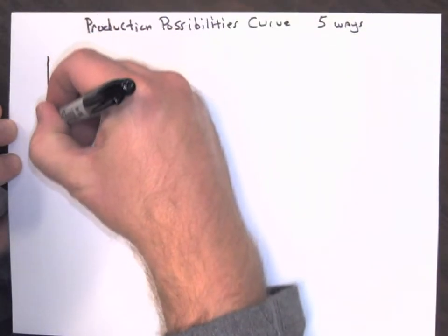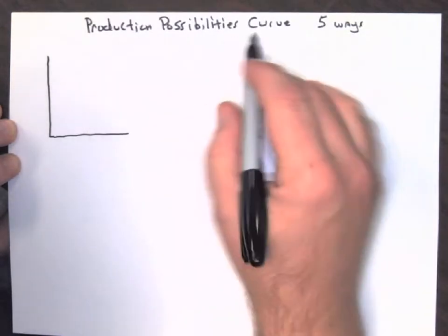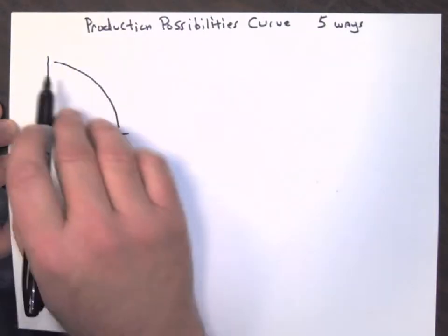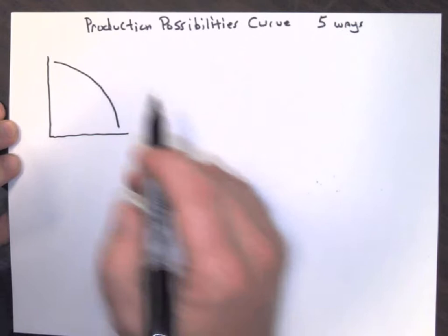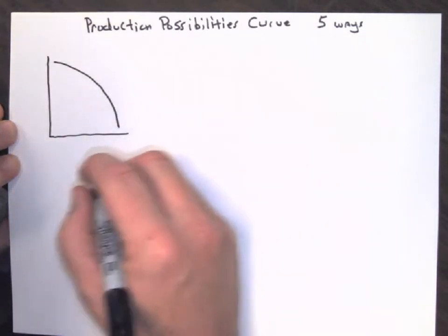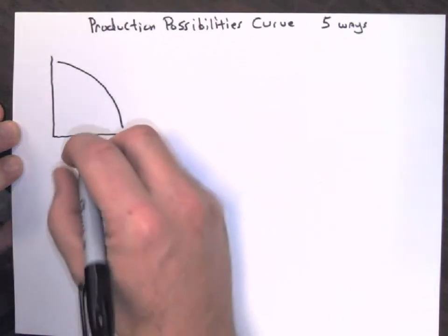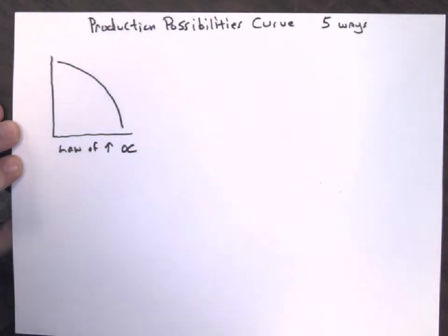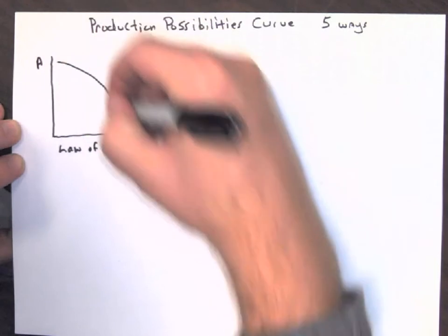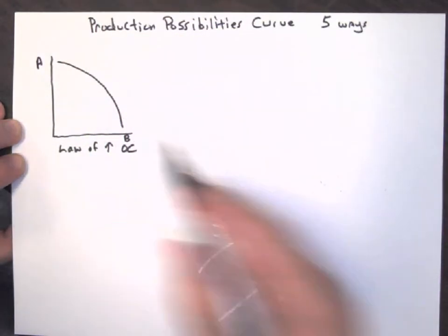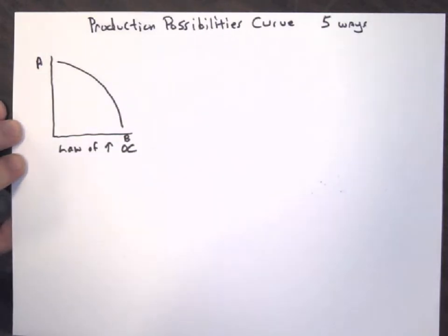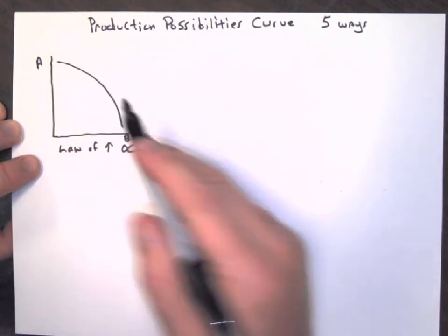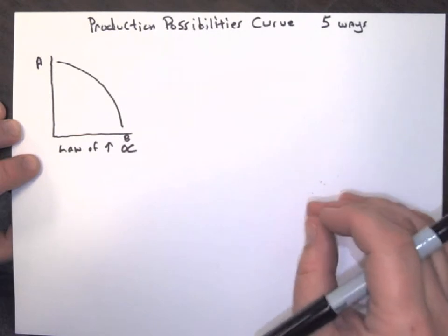The most common shape for the production possibilities curve is to be bowed outward. This is our x-axis and our y-axis, and it shows all the possible production possibilities that exist between two items. Whenever the curve is bowed outward like this, it is due to what we call the law of increasing opportunity cost.